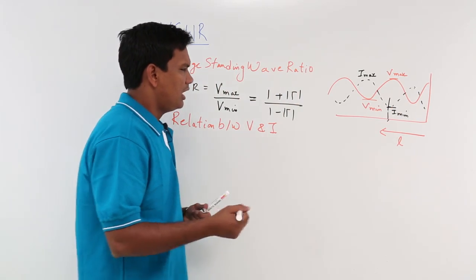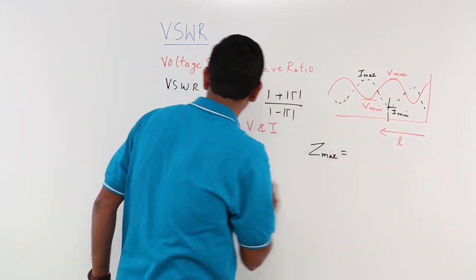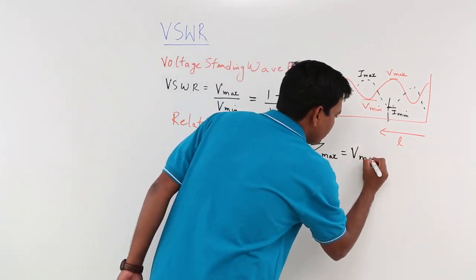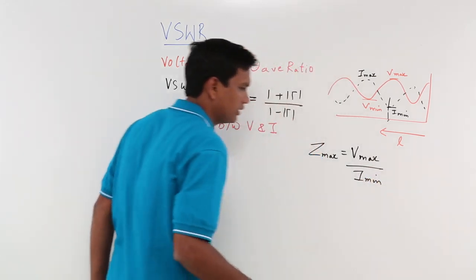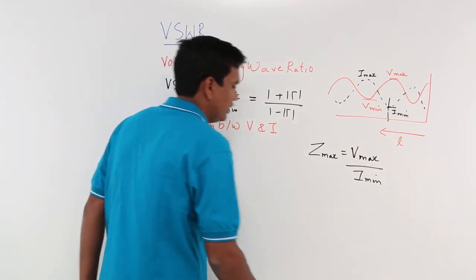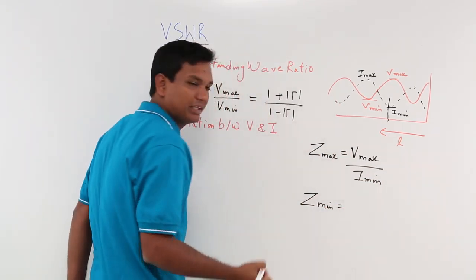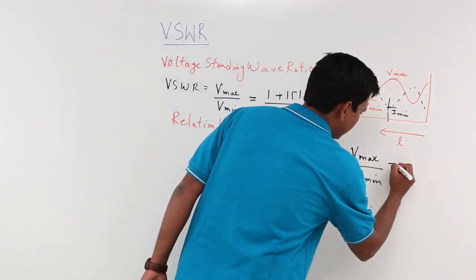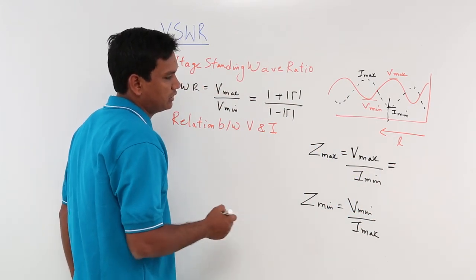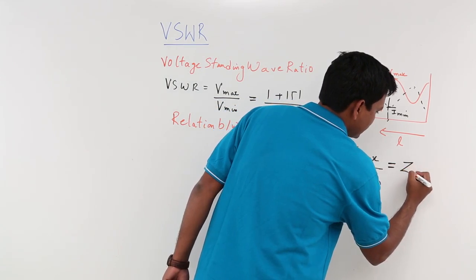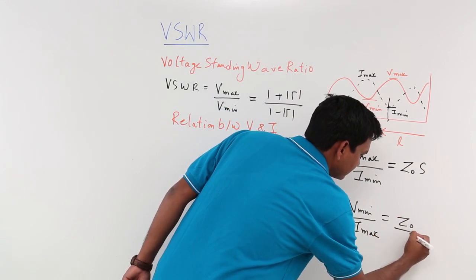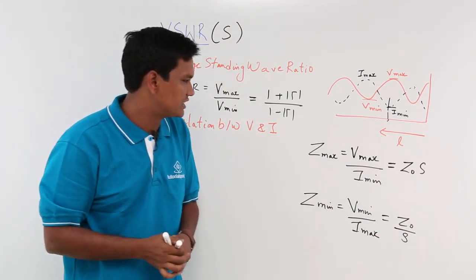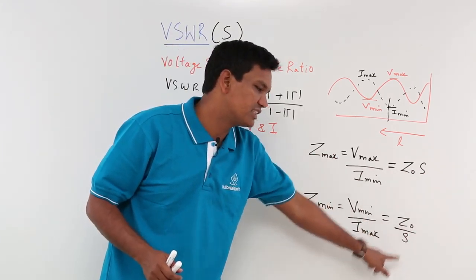Zmax is the ratio of Vmax divided by Imin, giving maximum impedance. Zmin is the ratio of Vmin divided by Imax. In terms of the standing wave ratio S and characteristic impedance Z₀: Zmax = Z₀ · S and Zmin = Z₀ / S. We will see how to solve numerical problems on this in the next videos.